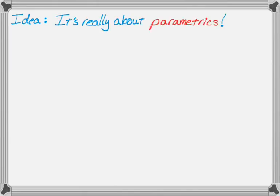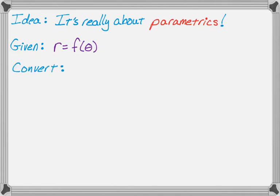The basic idea is that we're really going to be talking about parametric equations. You start with a polar curve and convert. So you're given something like r equals f of theta — maybe r is cosine of seven theta or one plus two sine of theta, just some kind of polar curve. We convert using x equals r cosine theta and y equals r sine theta.